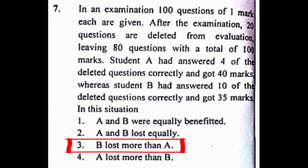Problem number 7: In an examination, 100 questions of 1 mark each are given. After the examination, 20 questions are deleted from evaluation, leaving 80 questions with a total of 100 marks. Student A has answered 4 of the deleted questions correctly and got 40 marks, whereas student B had answered 10 of the deleted questions correctly and got 35 marks. In this situation, the correct answer to this problem is option 3, B lost more than A.